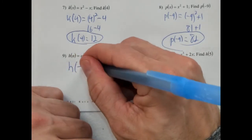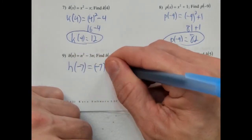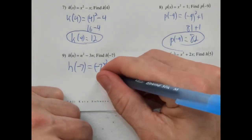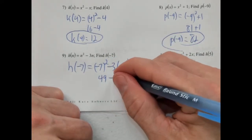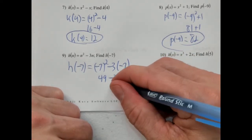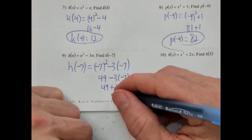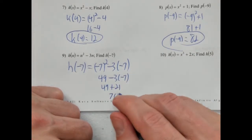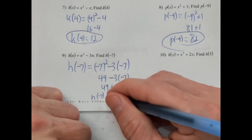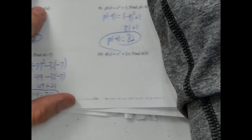h of negative 7: negative 7 squared minus 3 times negative 7. Negative 7 squared is 49. Negative 3 times negative 7 is positive 21. So 49 plus 21 is going to be 70. h of negative 7 equals 70 — let me know if I made a mistake in the comments.